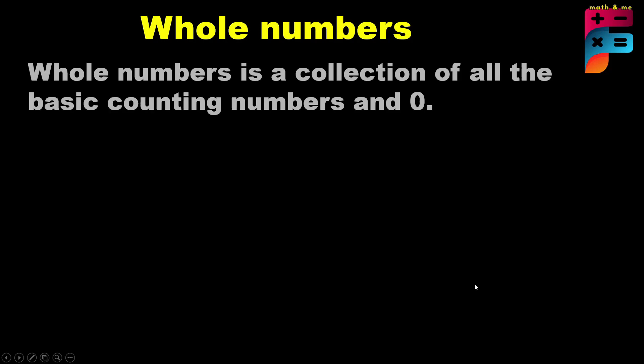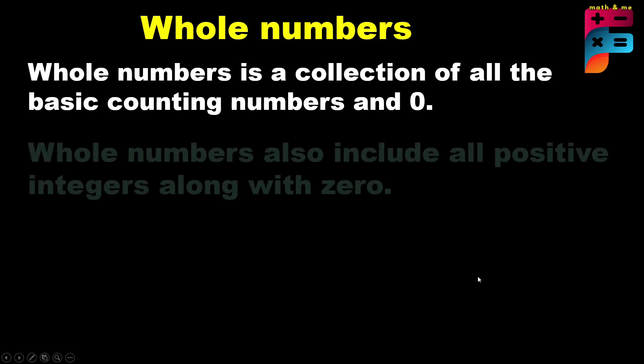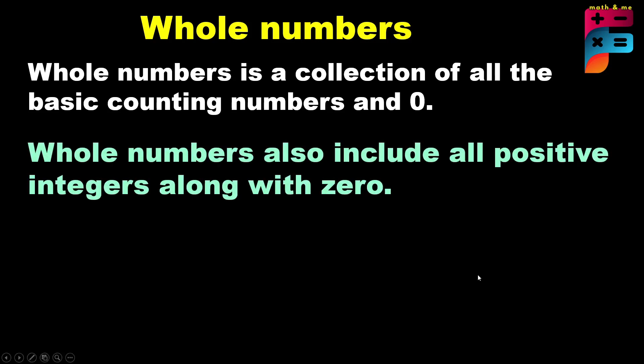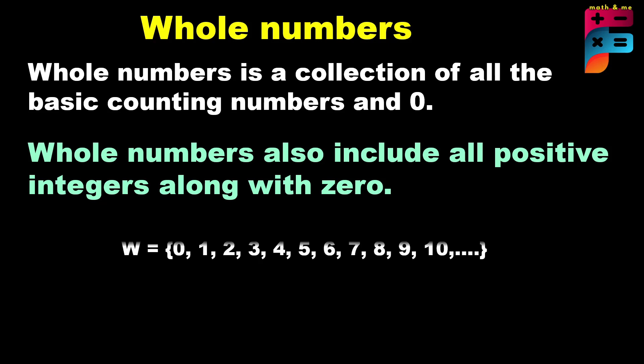Whole numbers. A whole number is a collection of all the basic counting numbers including 0. Whole numbers include all positive integers along with 0 — for example, 0 to infinity.